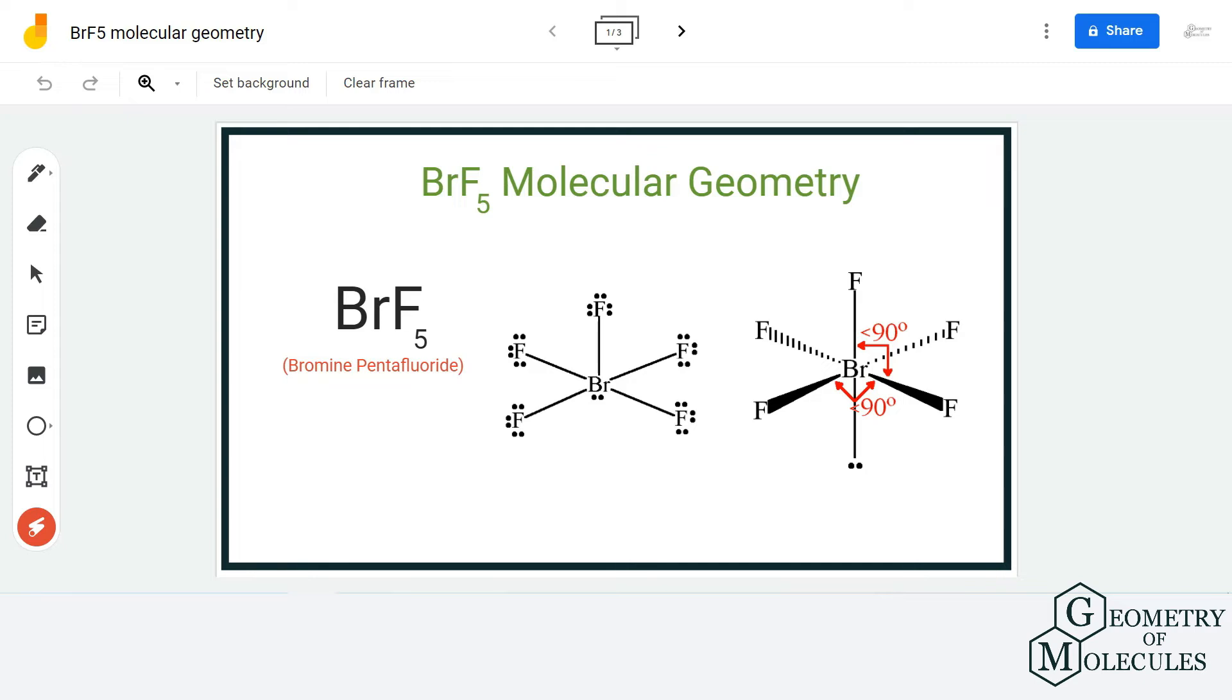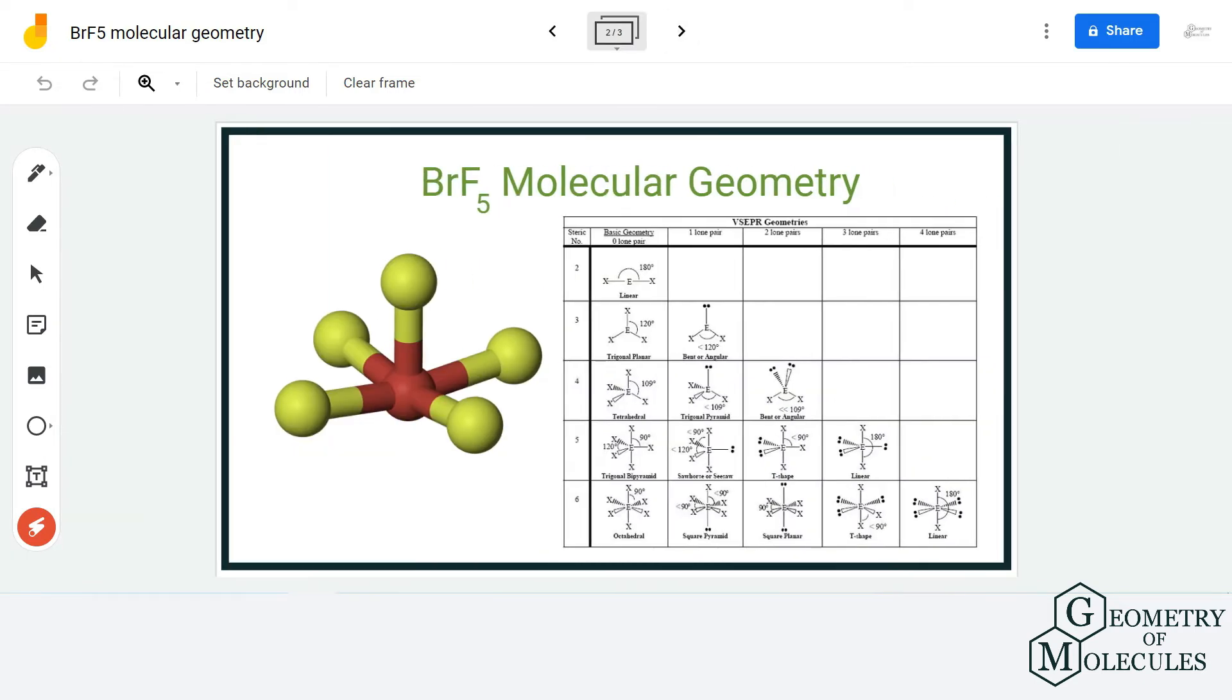But to confirm it further, we are going to use the formula for steric number and refer to the table that can help us confirm the molecular geometry for BRF5. So bromine atom over here, which is the central atom, is forming bonds with five fluorine atoms. Apart from that, it has one lone pair.